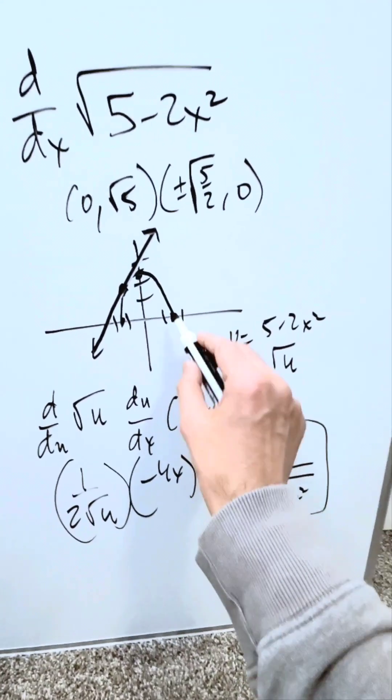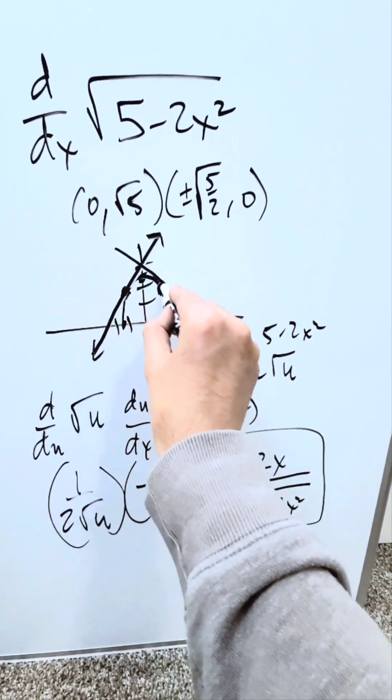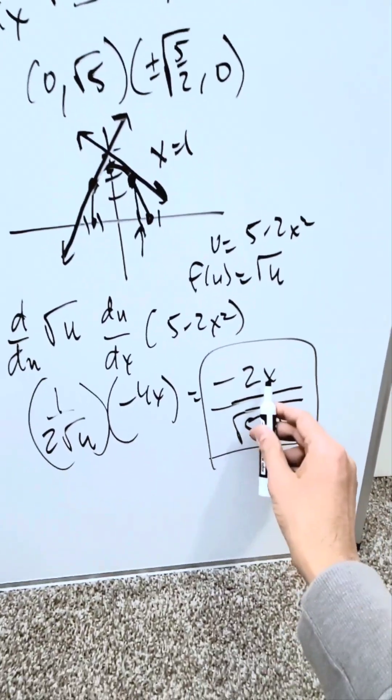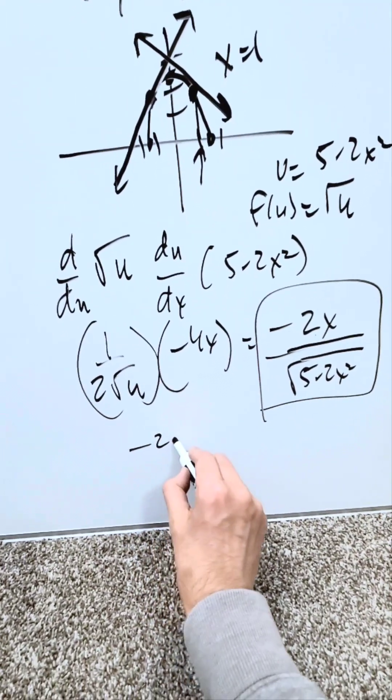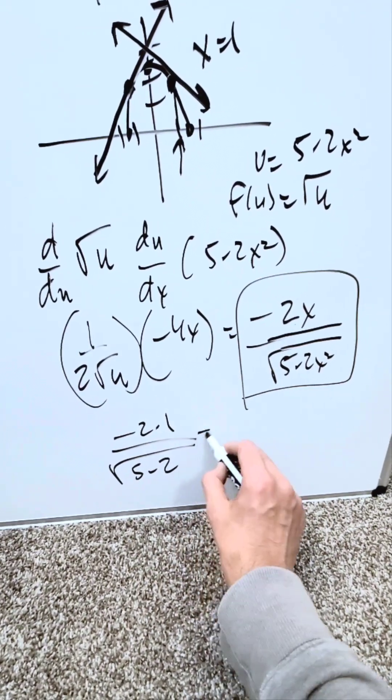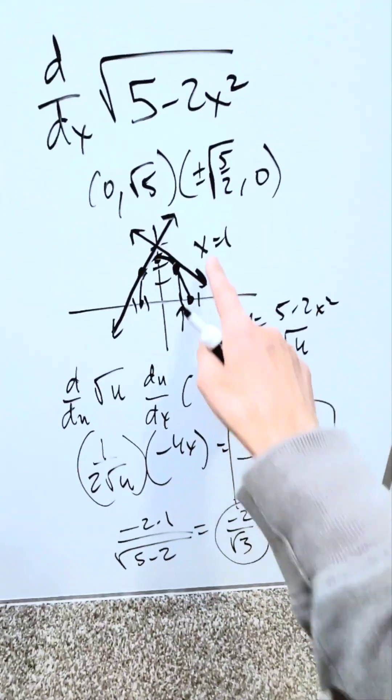Now all I need to do is determine an x value. I'm interested in x equals 1. I draw a tangent line here. What's the slope of this tangent line? At this point x equals 1. Putting the x value of 1, I'll have -2 times 1 divided by √(5-2(1)²), which simplifies to -2 over √3. This is the slope of this tangent line.